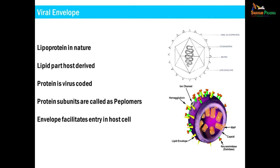Certain viruses have an outer covering known as the envelope. This envelope is lipoprotein in nature. The lipid part of the envelope is derived from the host, but the protein is coded by genes present in the nucleic acid of the virus. The protein subunits present on the envelope are known as peplomers. In enveloped viruses, the envelope — with the help of peplomers — gets attached to receptors present on the host cells, facilitating entry into the host cell.